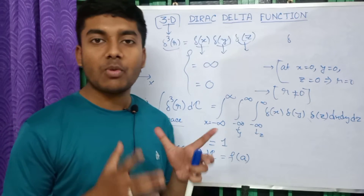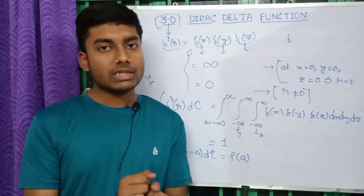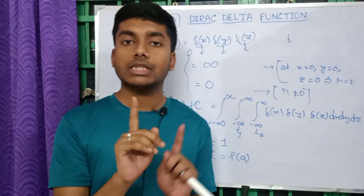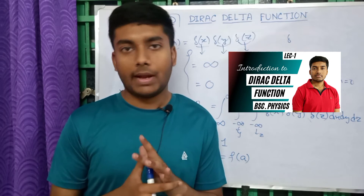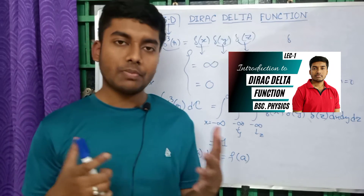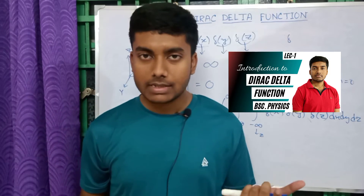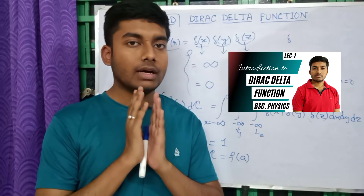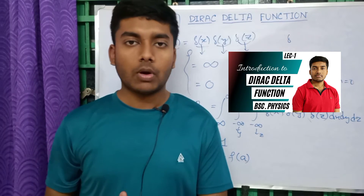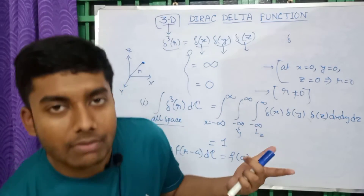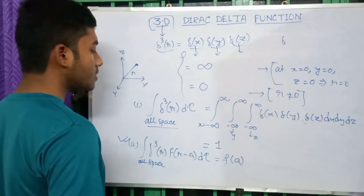Now the most important and interesting application: in lecture number one I mentioned a paradox — a so-called paradox or problem from electrostatics. I stated that this paradox can only be solved with the help of the Dirac Delta function. Now I will show you how this paradox is solved.